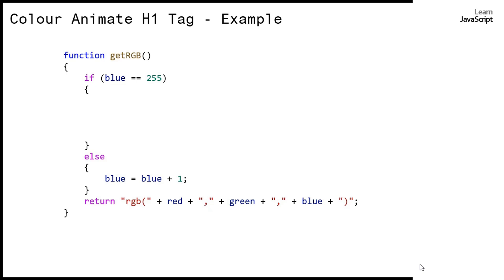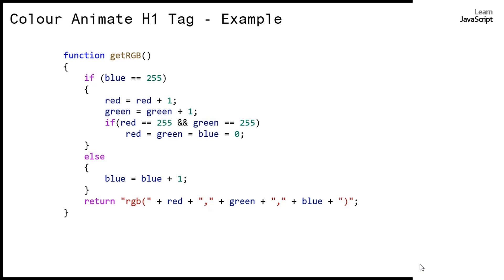Once blue reaches 255 we go to the if part where we increase the red and green components. Once red and green also reach 255, we reset red, green, and blue to zero. This keeps the animation cycling: from black to high-intensity blue, then blue shades out toward light blue, then further to white, then resets to RGB zero, and the loop repeats until you stop it.